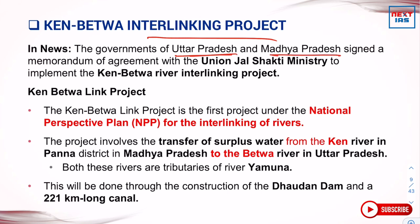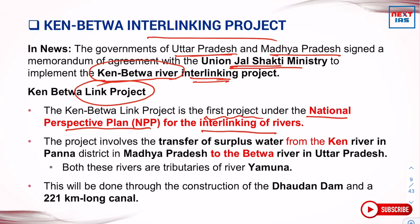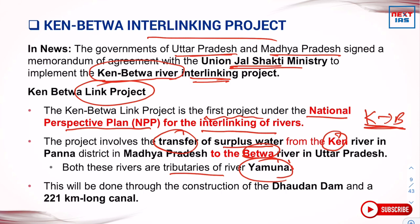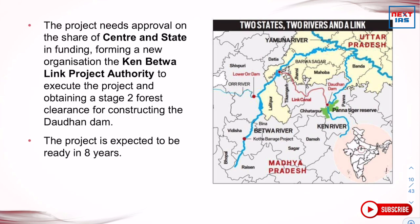The governments of Uttar Pradesh and Madhya Pradesh have signed a memorandum of understanding with the Jal Shakti Ministry to implement the Ken-Betwa river interlinking project. This is the first project under the National Perspective Plan for the interlinking of rivers. It involves transfer of surplus water from the Ken to the Betwa river. Both these rivers are tributaries of the Yamuna. A 221-kilometre-long canal will be dug from the Daudhan Dam for this transfer.